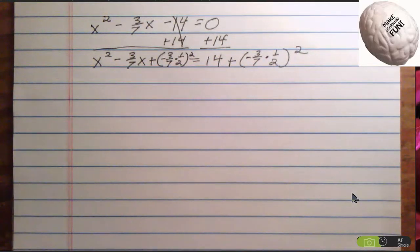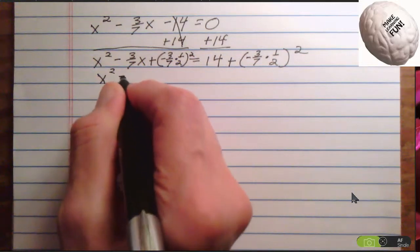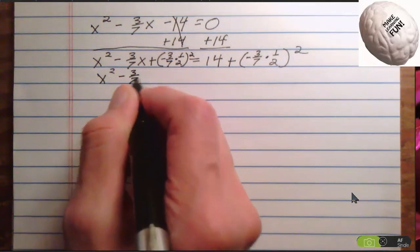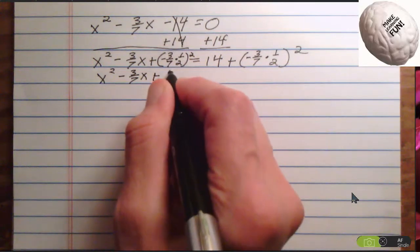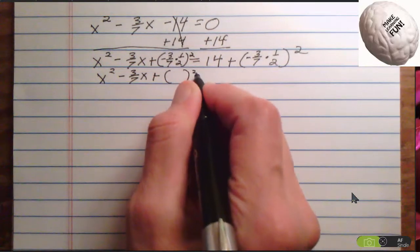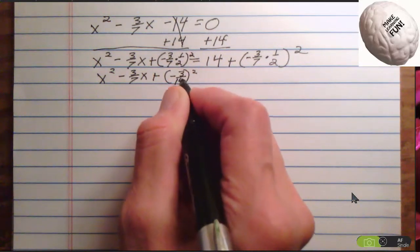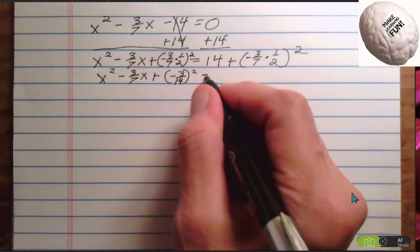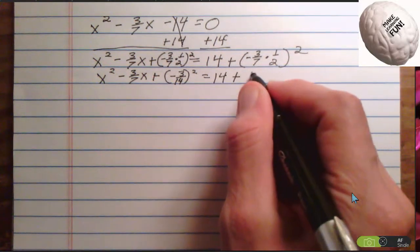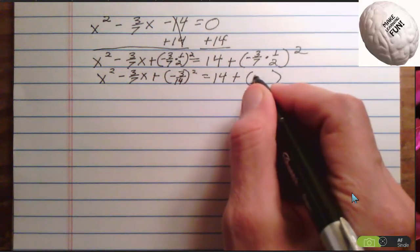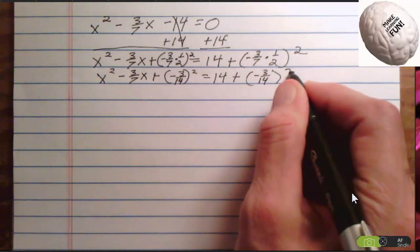Right, because that's the method. Now, x squared minus 3 sevenths x plus negative 3 fourteenths squared equals 14 plus parentheses negative 3 fourteenths squared.